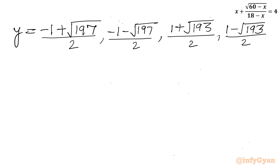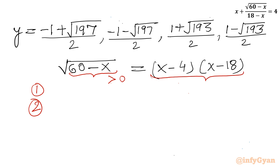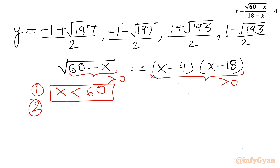Now let's go back to our equation: square root (60 minus x) equals (x minus 4)(x minus 18). Two important conditions: from the left-hand side, the radicand must be non-negative, so x must be less than 60. From the right-hand side, the product must be greater than or equal to zero, so x should be less than 4 or x should be greater than 18.